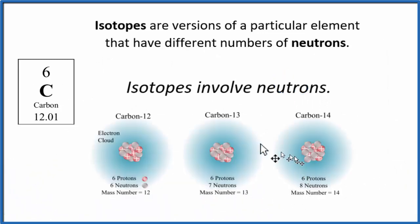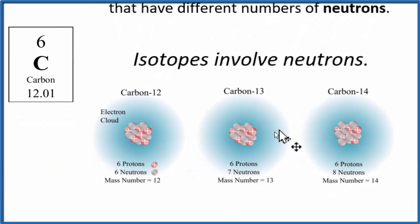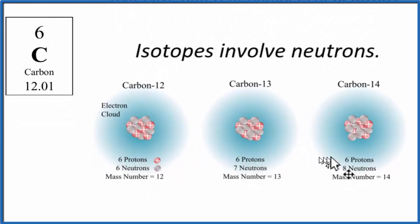So here we have the three primary isotopes of carbon. They all have six protons, because the atomic number for carbon is six. The thing that's different are the number of neutrons: six neutrons, seven neutrons, and eight neutrons. And when we add neutrons and protons, six plus six, that gives us the mass number twelve. That's how we name these.